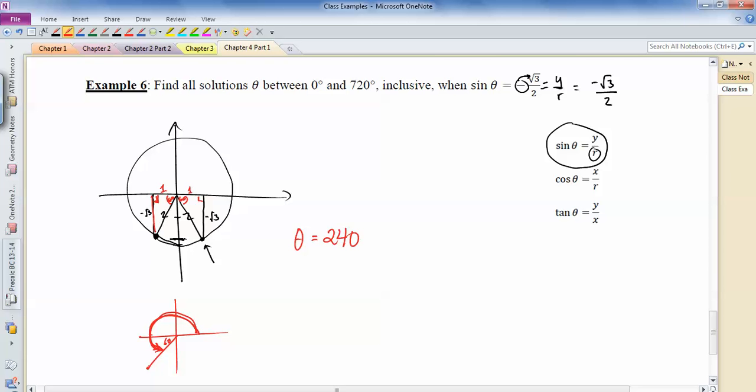But it doesn't just have to be there. It could be 240, it could be 240 plus 360 to get to there, or plus 720. So I'm going to write it like this: 240 plus 360 times k, where k is an integer.